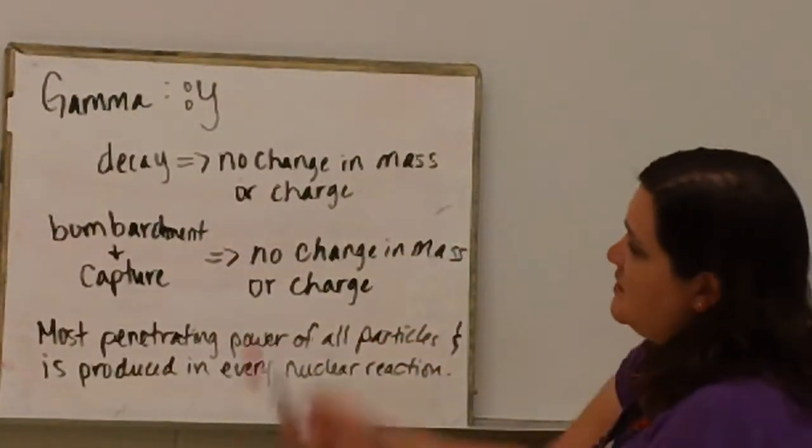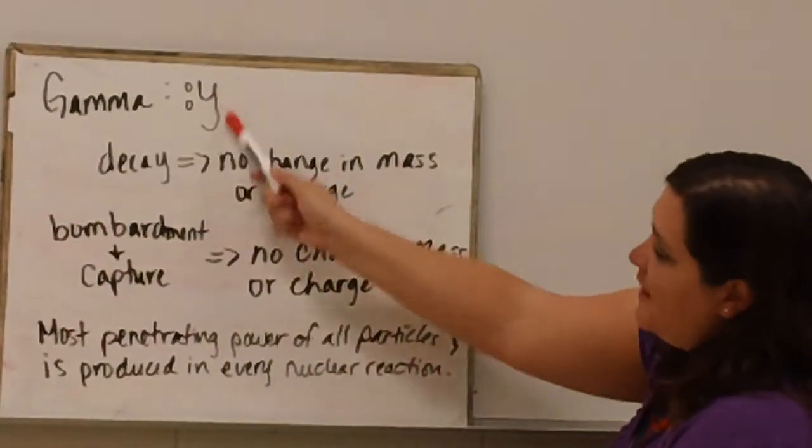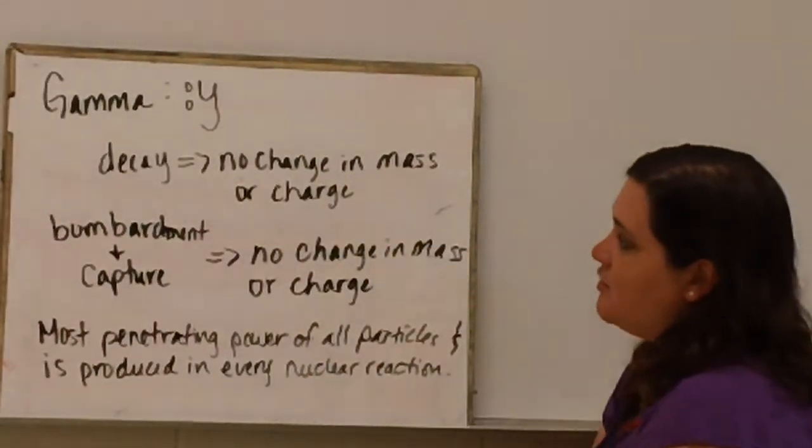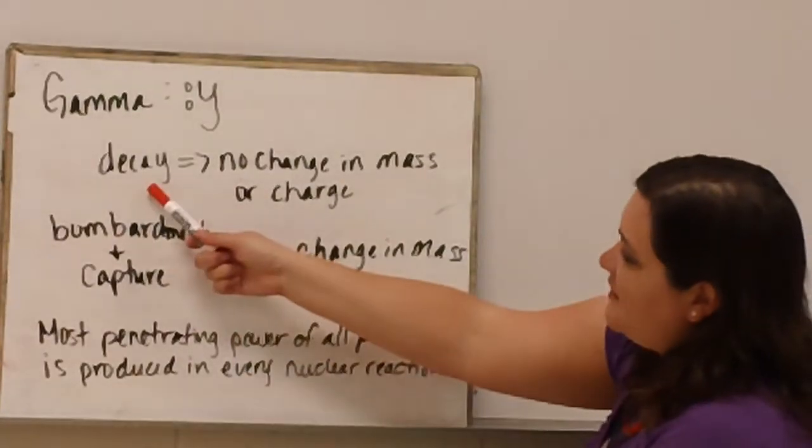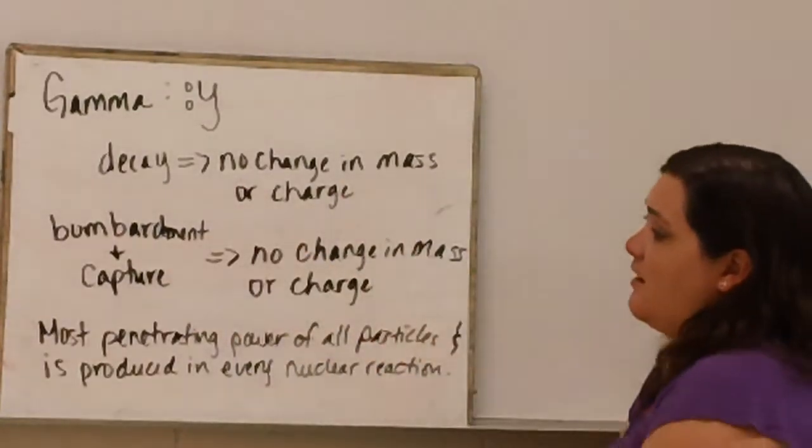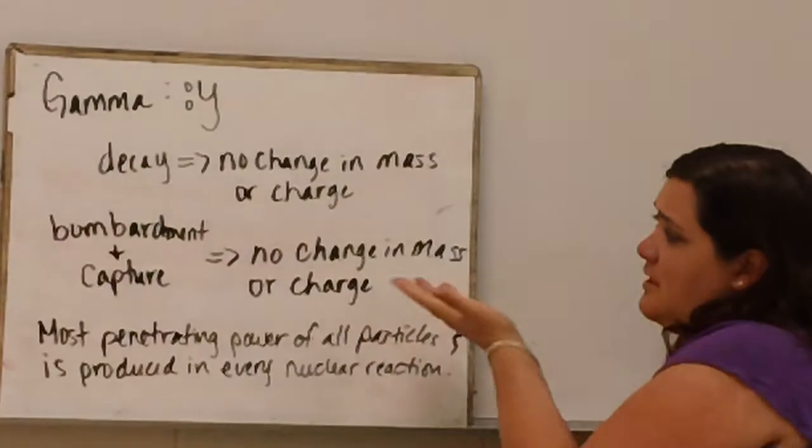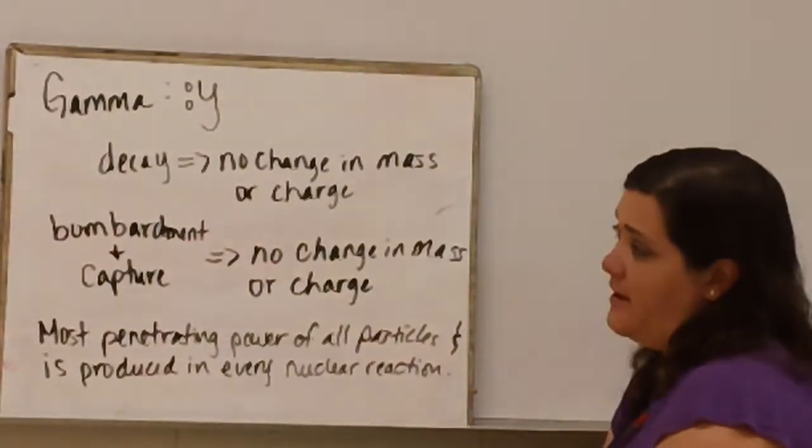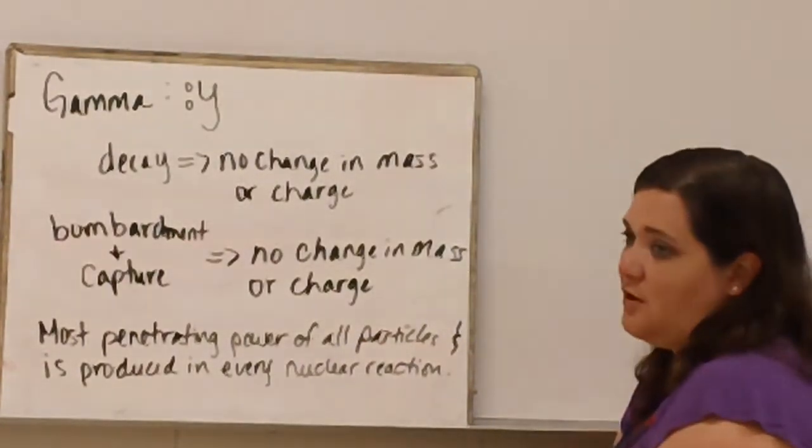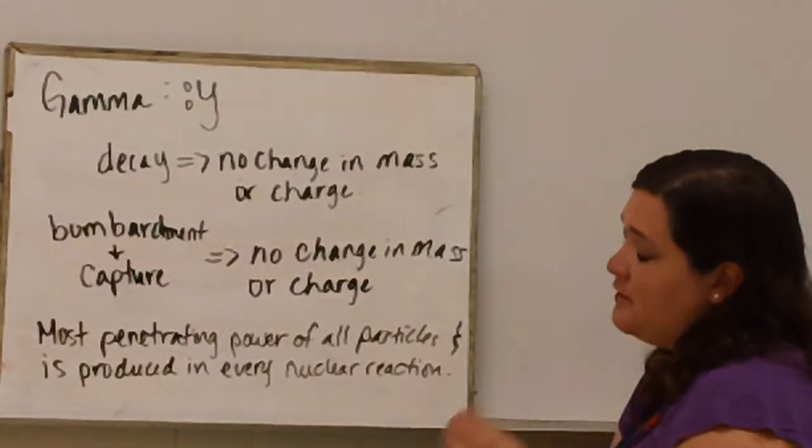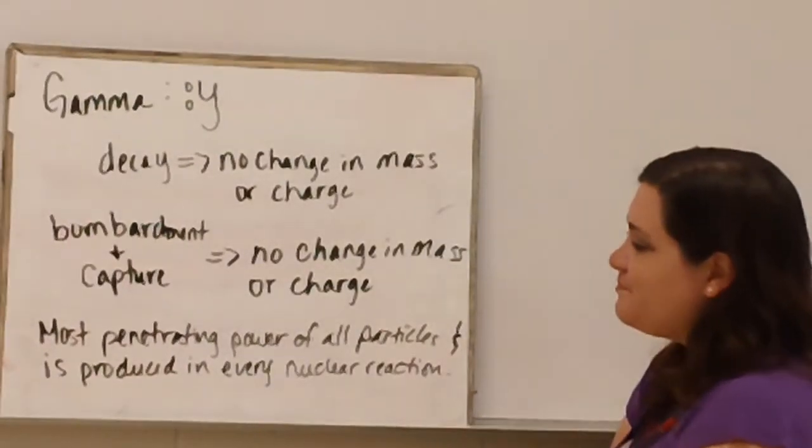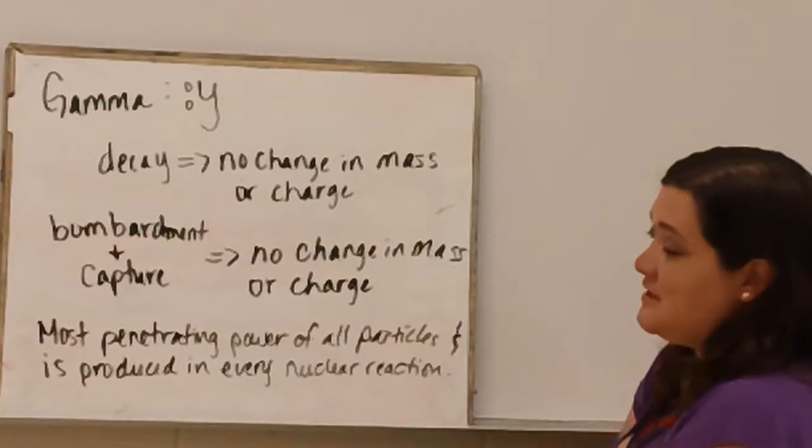Gamma rays have the symbol 0-0 gamma. Gamma decay and bombardment and capture has no effect on the charge or the mass because gamma rays do not have any charge or any nuclear charge or mass. They are just energy.